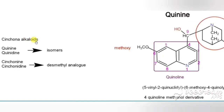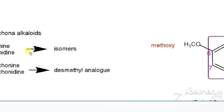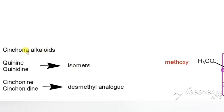Now we will see the source of quinine. Quinine is an alkaloid obtained from the bark of cinchona. From cinchona we get four alkaloids: quinine, quinidine, cinchonine, and cinchonidine. Quinine and quinidine are isomers, and cinchonine and cinchonidine are isomers.